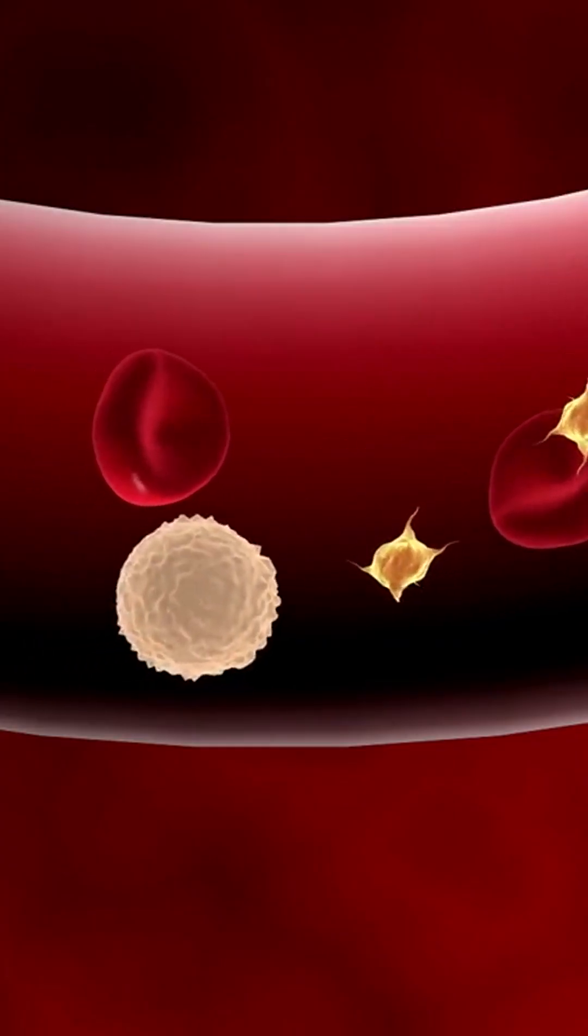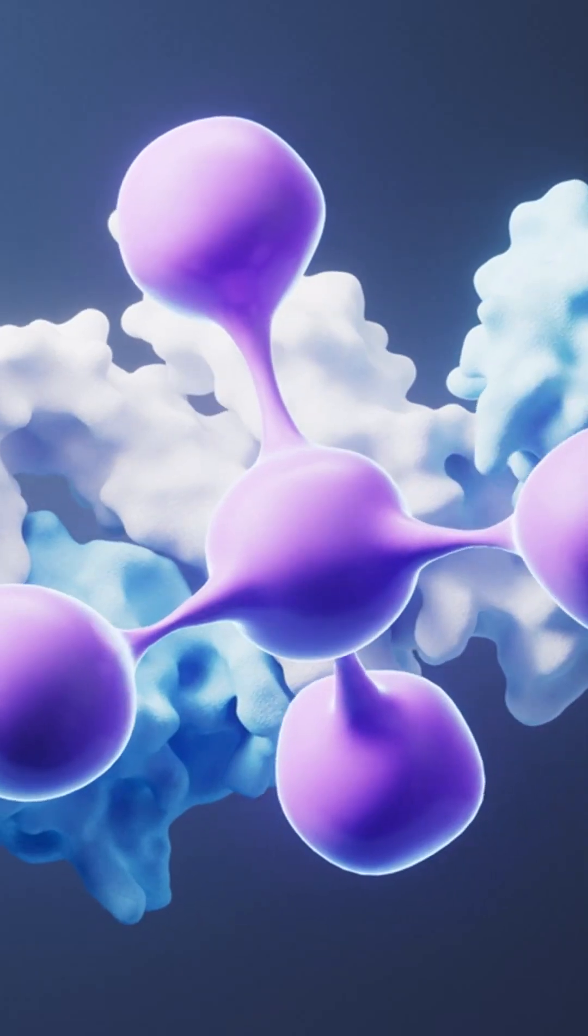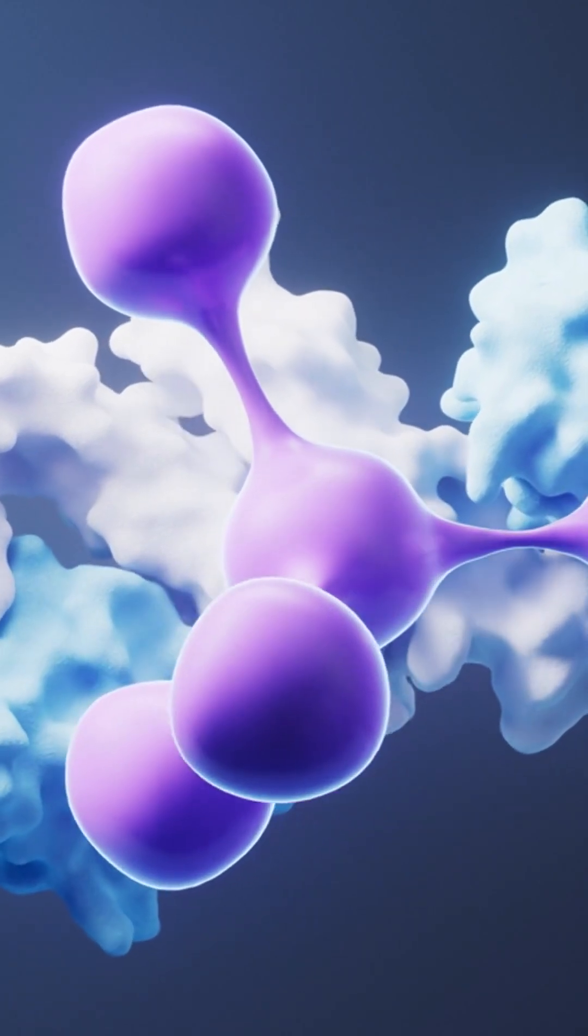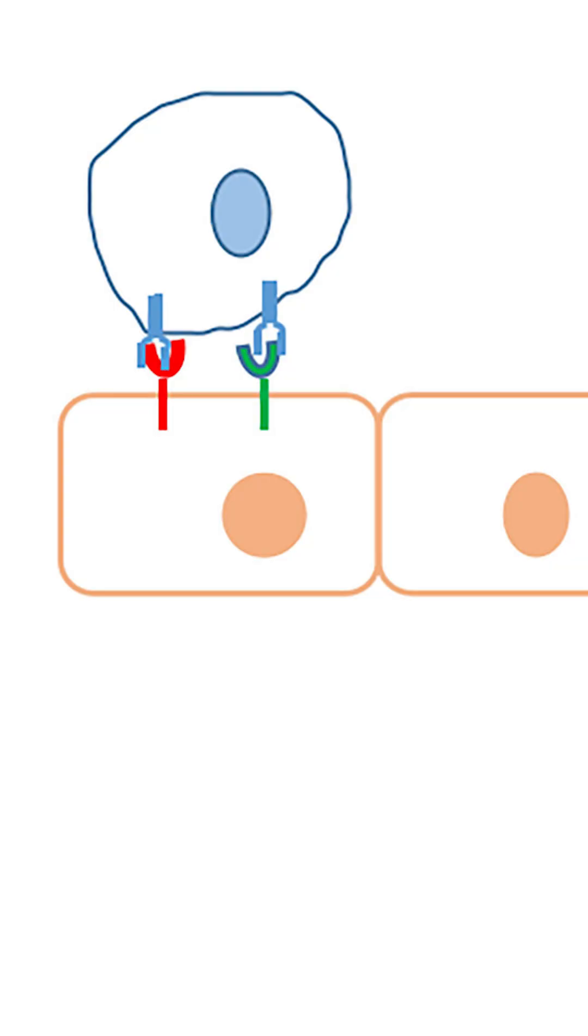Then comes lockdown. Signal molecules like chemokines flip a switch inside the cell. Now its surface superglue proteins—integrins—activate, grabbing the wall tight and bringing that speeding cell to a stop.